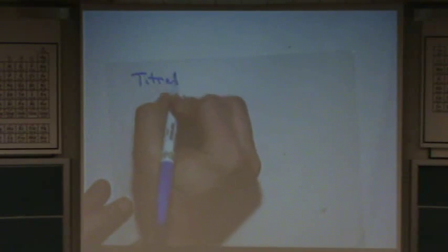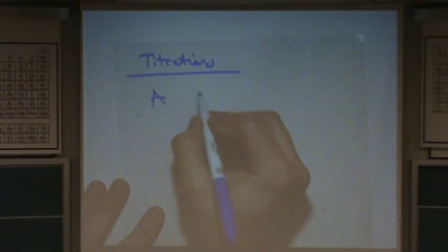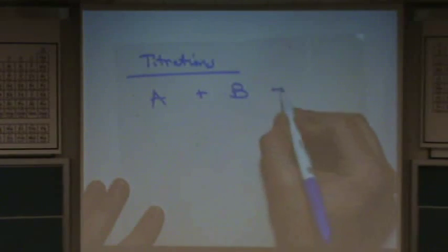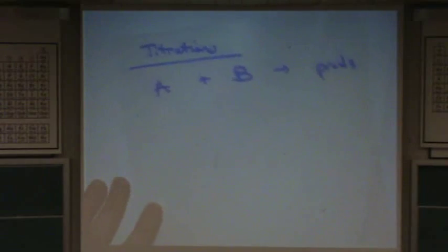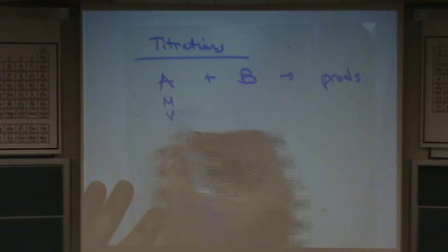Titration problems. Just kind of combo these two topics because they're really similar. You have A plus B goes to the products. And in this case, info is given about both, but one of them is not mole related. For example, you'll be given like molarity here and volume or something like that. Can you change that to moles?